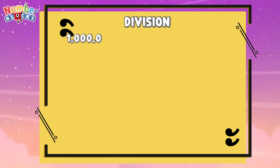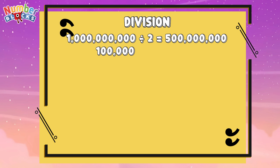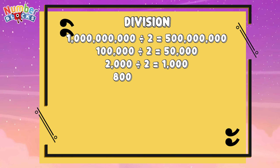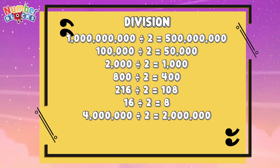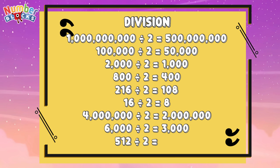Let's check out some examples. 1,000,000,000 divided by 2 is equals to 500,000,000. 1,000,000 divided by 2 is equals to 500,000. 216 divided by 2 is equals to 108. 16 divided by 2 is equals to 8. 6,000 divided by 2 is equals to 3,000. 512 divided by 2 is equals to 256.